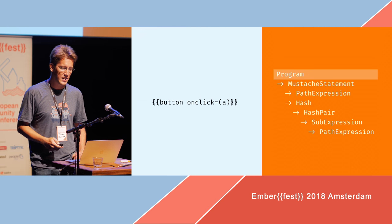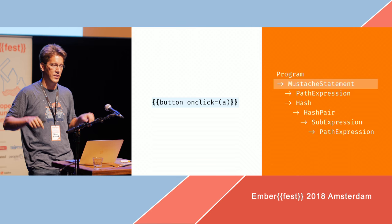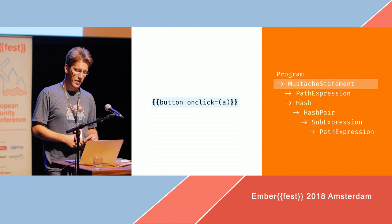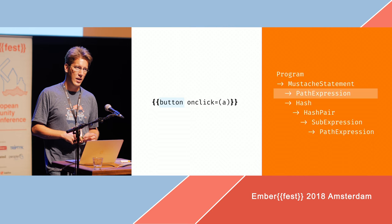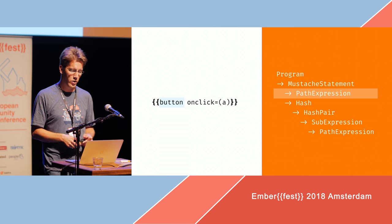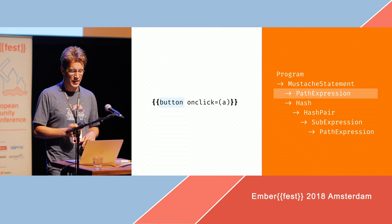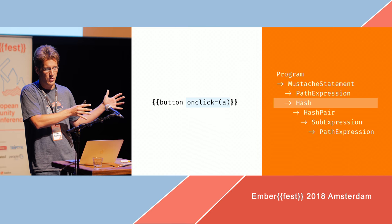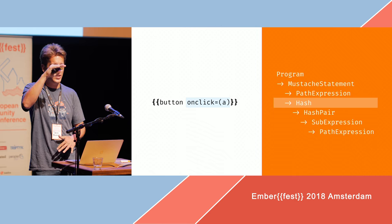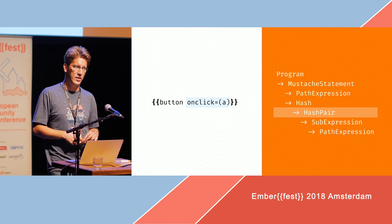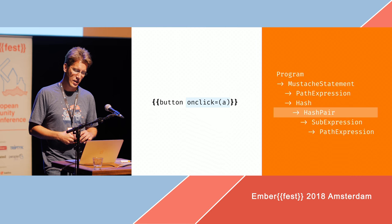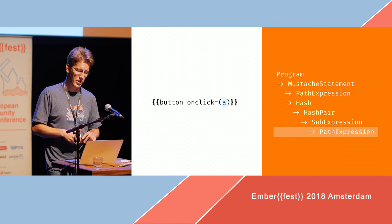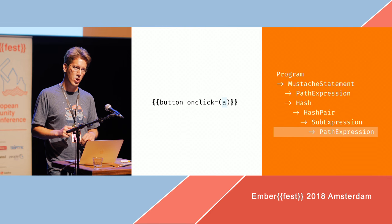At the top we have the program node — that's basically your whole template. The next node is just the one mustache statement, so the double curlies. The next child is the path expression, which is the name of the component, helper, or context variable. Also in the mustache statement is a hash — that's all the attributes. Each attribute is a hash pair node. Inside of that is a sub-expression with the parentheses, and then inside of that, another path expression. That's the thing we care about — we want to do autocompletion for the path expression inside of a sub-expression.